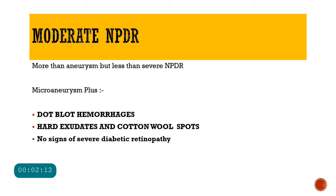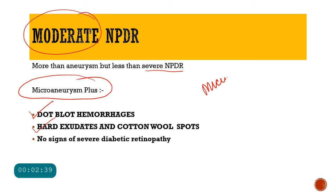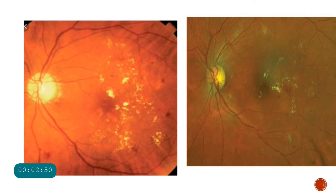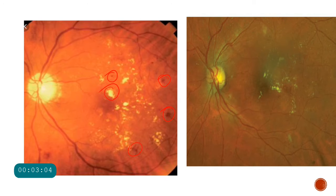Moderate non-proliferative diabetic retinopathy is said to have more than microaneurysms but less than severe NPDR. Along with microaneurysms, you can have dot-blot hemorrhages, hard exudates, or cotton wool spots, but there will be no signs of severe diabetic retinopathy. In this fundus picture, we have microaneurysms, hard exudates, and some dot-blot hemorrhages — indicating moderate NPDR.